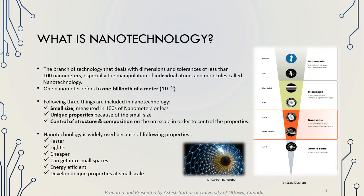Now let's talk about what is nanotechnology. Basically, it is the branch of technology that deals with dimensions and tolerances of less than 100 nanometers, especially the manipulation of individual atoms and molecules. One nanometer refers to one billionth of a meter. Nanotechnology involves things that are small in size, less than hundreds of nanometers, with unique properties due to their smaller size, and controlled structure and composition at the nanometer scale.